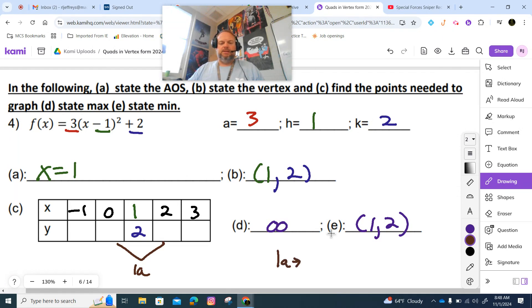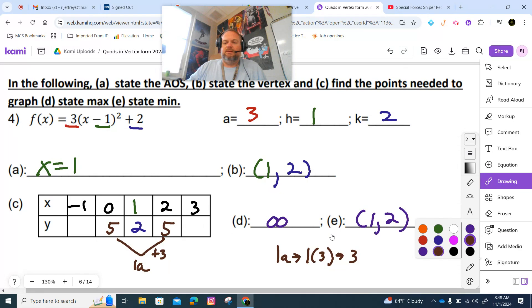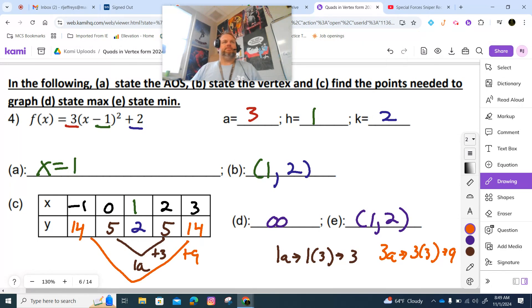1a - that's 1 times 3 which is 3. So what is 2 plus 3? It's 5. Then 3a - that's 3 times 3 which is 9. So we have 5 plus 9 which is 14.